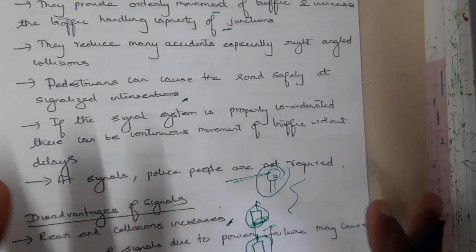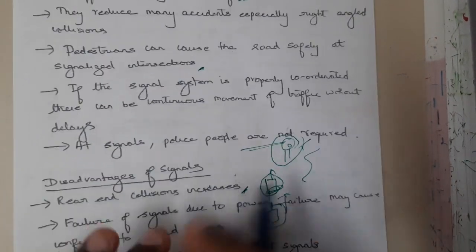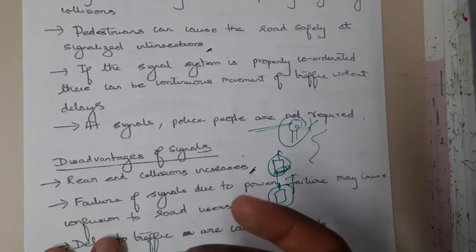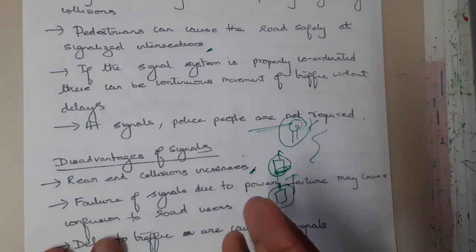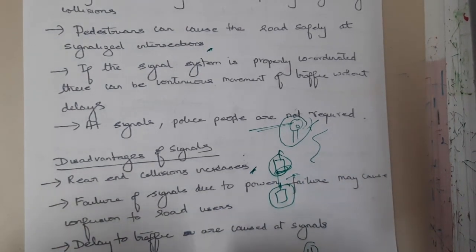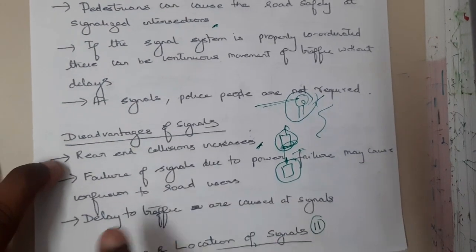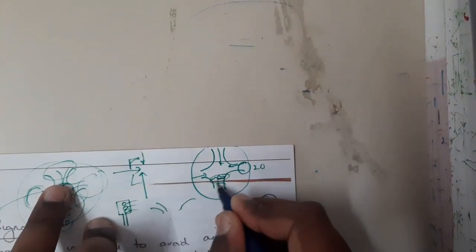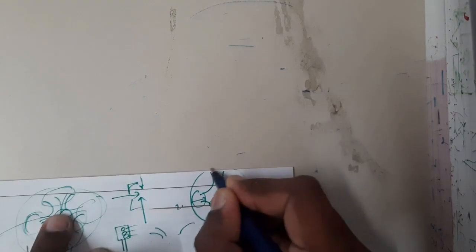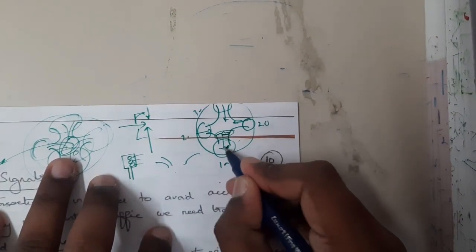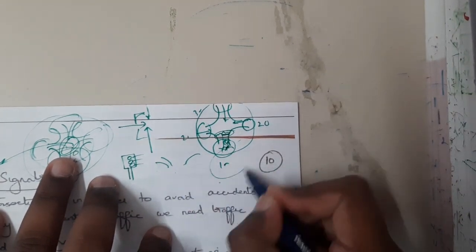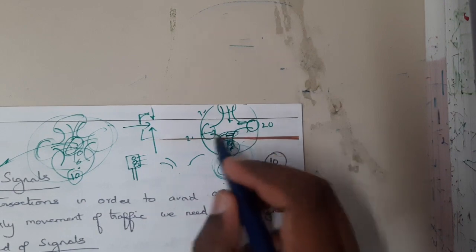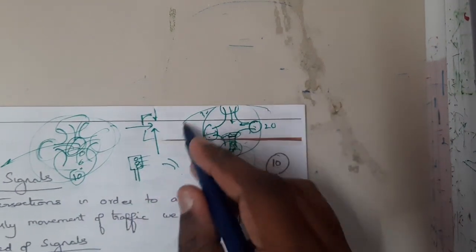Another disadvantage is signal failure. If a signal that has been working for around 10 years suddenly gets damaged and stops working, traffic becomes confused since drivers are accustomed to following signals. This leads to a huge traffic mess. Additionally, delay occurs with fully automated signals — if one lane is given one minute but has no vehicles at all, the other three lanes are still forced to wait, which is a clear inefficiency.